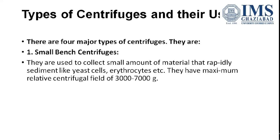The very first type is the small bench centrifuge, which you generally find in pathology labs where they perform separation of different cell components of blood. These are small centrifuges with small capacity and have a centrifugal force of 3,000 to 7,000. This is a picture of a small bench centrifuge that you usually find in lab rooms.